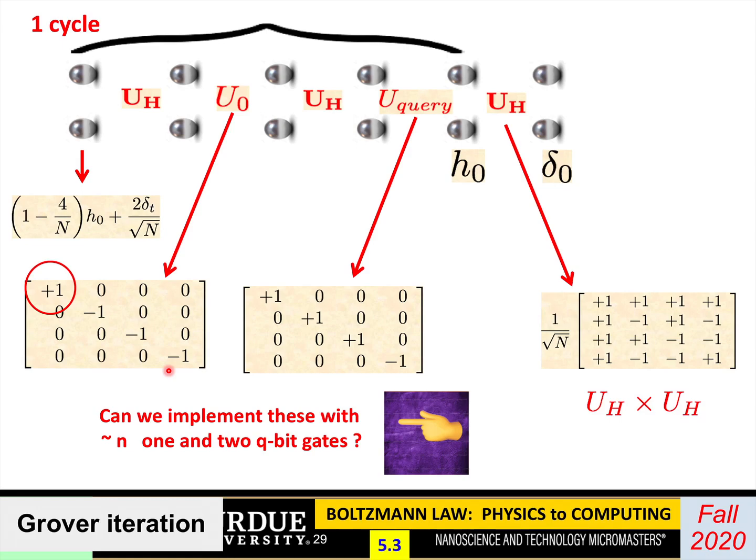To sum up, we just discussed one nice example of a quantum algorithm that makes use of Hadamard gates and combines it with other ideas to perform something useful, namely how to search a database with time that goes as square root of N rather than N. Next lecture, we'll talk about another seminal algorithm in the quantum literature called Shor's algorithm. Thank you.